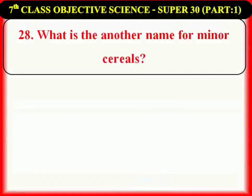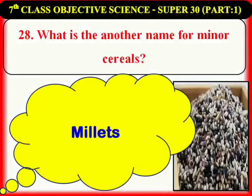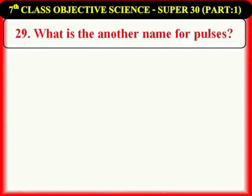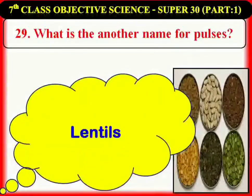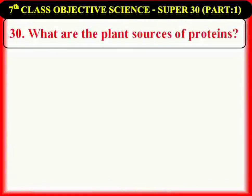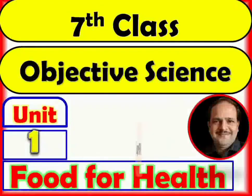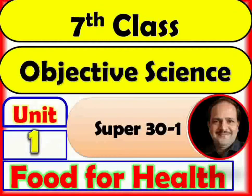What is another name for minor cereals? Millets. What is another name for pulses? Lentils. What are the plant sources of proteins? Pulses and soya beans. These are the 30 questions from 7th class objective science and their answers.